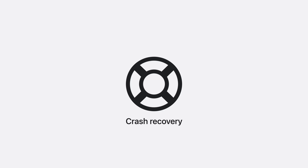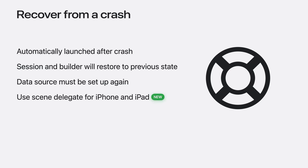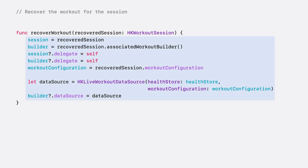Now that you know how to get metrics in session and how to use Siri intents and live activities, let's move on to crash recovery. Crash recovery has been available on watch for a while, but let me go over three key points: the system will automatically relaunch your app in case of a crash; the workout session and builder will be restored in their previous state; however, you'll need to set up your live data source again. For iPhone and iPad, we've added a new scene delegate you'll use to recover your in-session workout. You can use the app delegate you created for Siri intents to add a scene delegate to handle crash recovery. We'll start by defining our app delegate and check if the options parameter indicates we should handle active workout recovery. Then grab the recovered workout session from the health store, passing the recovered session to your workout manager. From your workout manager, you can handle continuing the active workout — and remember, we only need to recreate our data source.